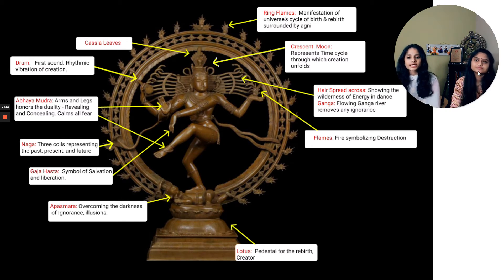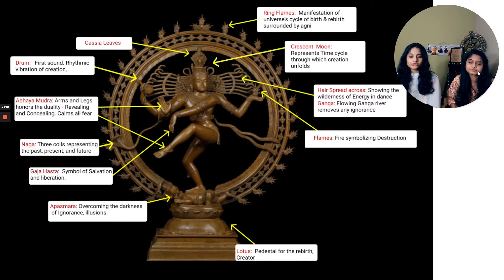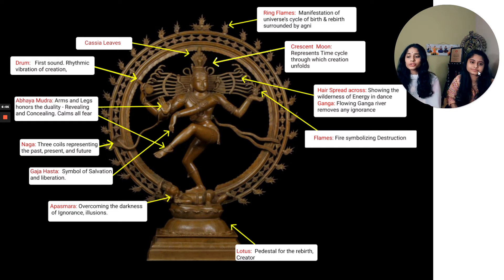The hair is spread out and chaotic, symbolizing the wilderness and the energy required to complete these dance forms. The river Ganga symbolizes the removal of ignorance. There are also flames called Agni, symbolizing destruction, which is what Lord Shiva represents. At the bottom, there is a lotus, which is the pedestal for rebirth. The Damaru, or drum, represents the first sound of the rhythmic vibration of creation — also called the heartbeat of the cosmos. The Abhaya Mudra, shown through the arms and legs, is for calming all fear. The Naga, the three coils, represent the past, present, and future. And lastly, the Gajahasta is a symbol of salvation and liberation.